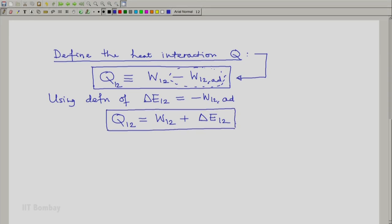This form or its general form which is without that 12, if we assume that everything pertains to the same process, same initial state, same final state and path, then we can write q equals w plus delta e which happens to be the final form of the first law.